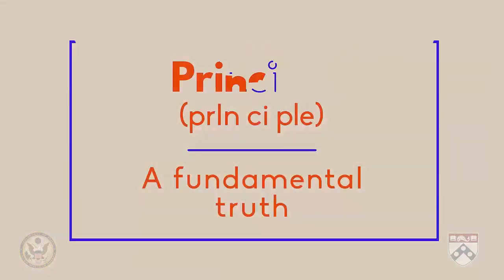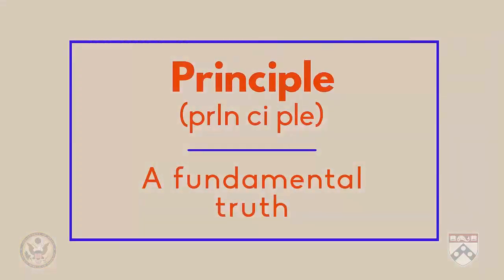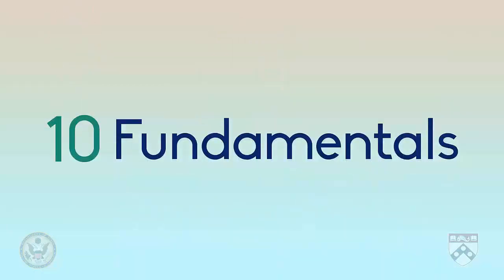First of all, it's important that we understand what a principle is. A principle is a fundamental, really important truth that is the basis of something. The principles of journalism are the things that journalists have to remember to do all the time. There are ten fundamental principles of journalism.